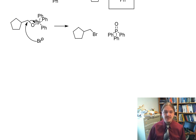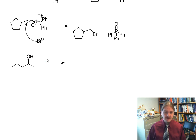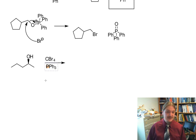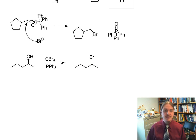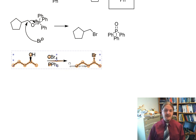I chose to do this example on a primary alcohol, but if I had chosen a secondary alcohol, then certainly we would have ended up with inversion. While there are in fact three SN2 mechanism steps here — you never knew when you learned about SN2 that you'd see it three times in the same reaction — only one of them is at the carbon. So we get inversion.